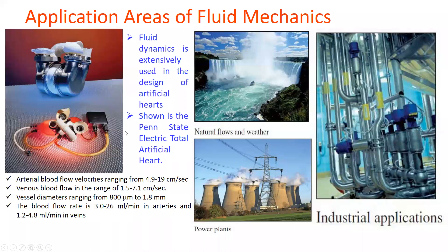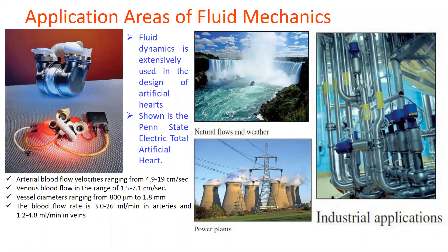Fluid dynamics is extensively used in the design of artificial hearts. If a human heart is not functioning properly, technology has advanced both medically and technically to replace it. This is shown by the Penn State electronic total artificial heart. Arterial blood flow velocities range from about 4.9 to 19 centimeters per second — roughly 5 to 20 cm/s within the artery.